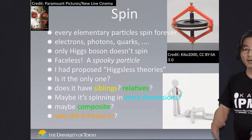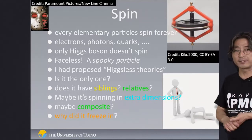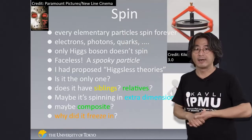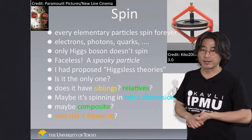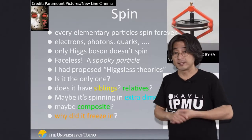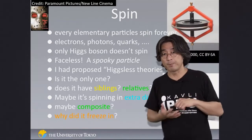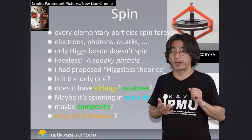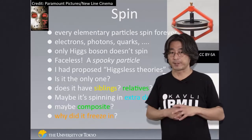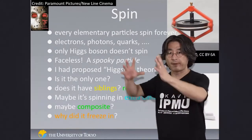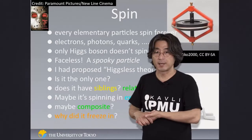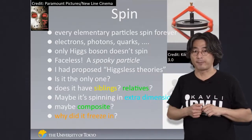Now that we have discovered a Higgs boson — which looks as spooky as expected — we would like to understand this particle better. For example, is it the only particle in nature that doesn't have spin? Or does it have siblings or relatives of some sort? Maybe there is a whole family of faceless, spinless particles, and this is the first one among this family.